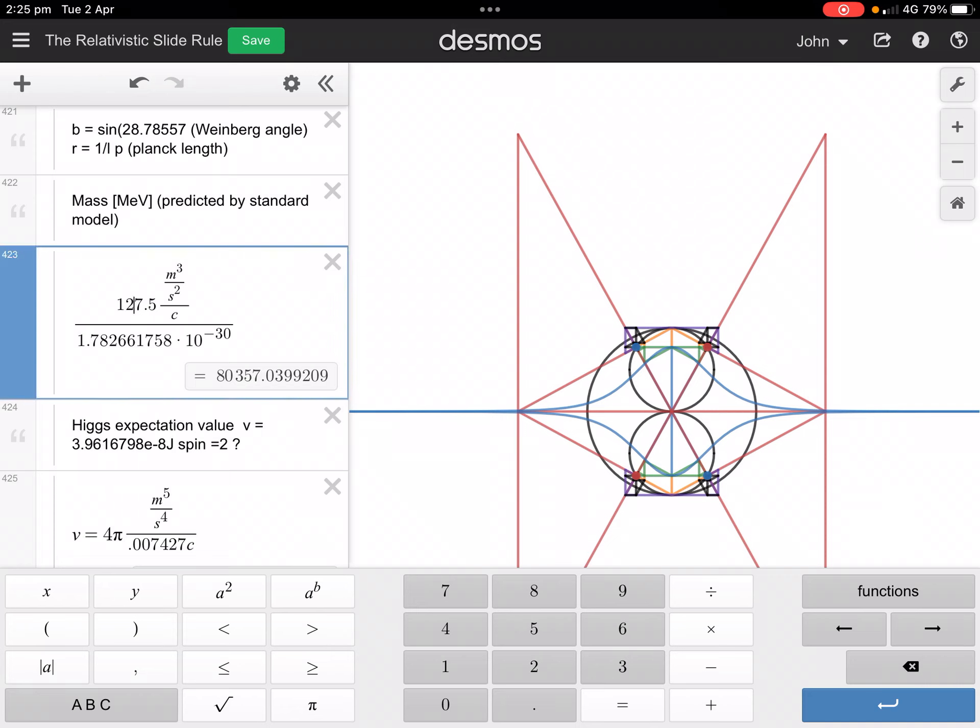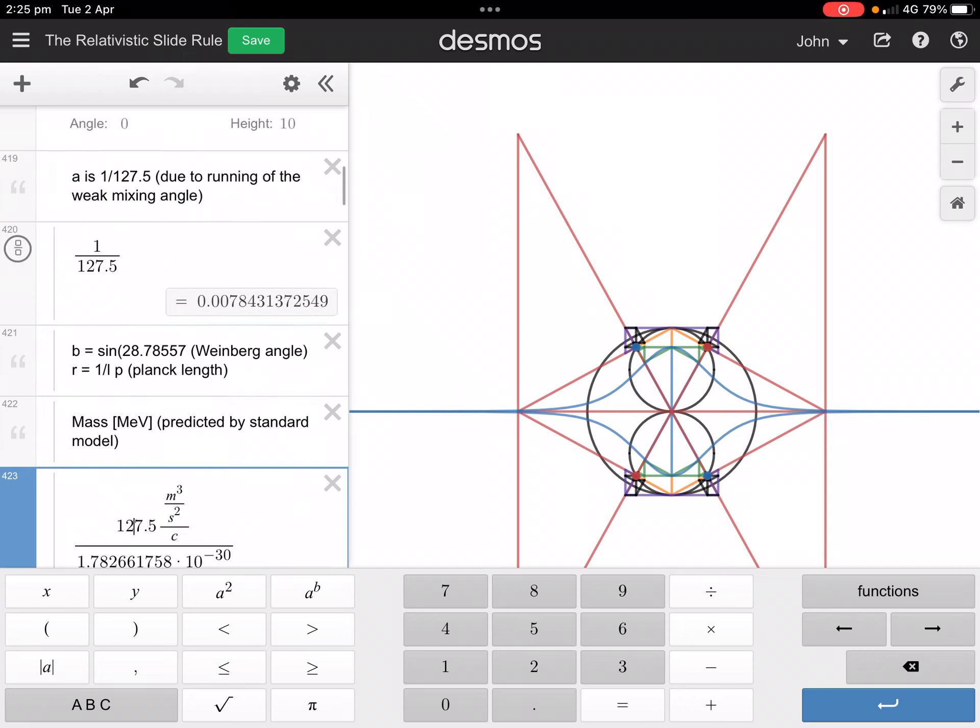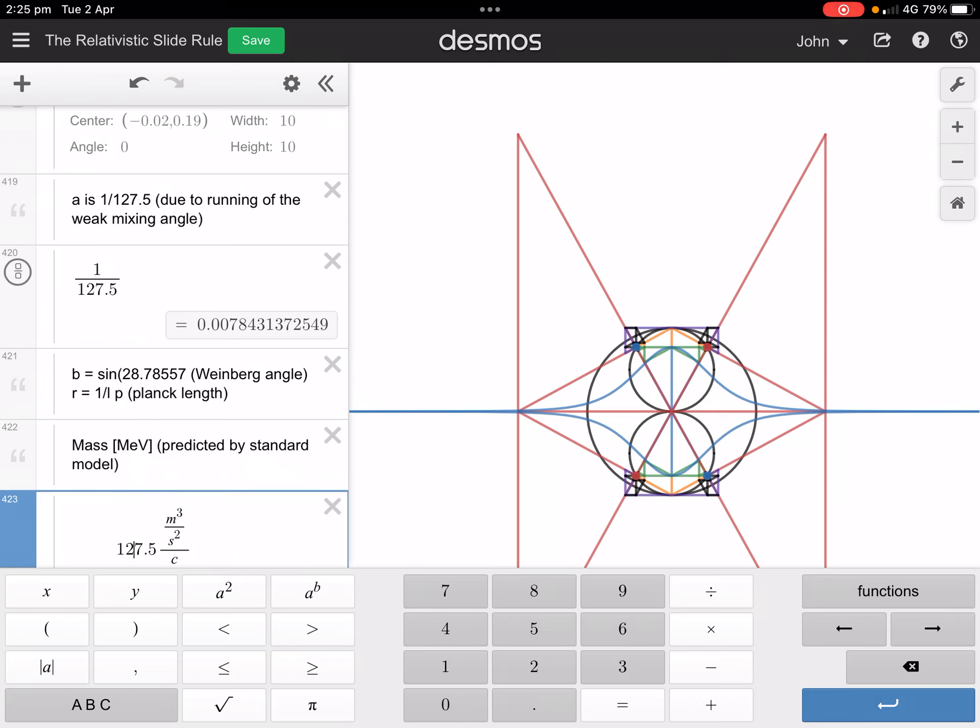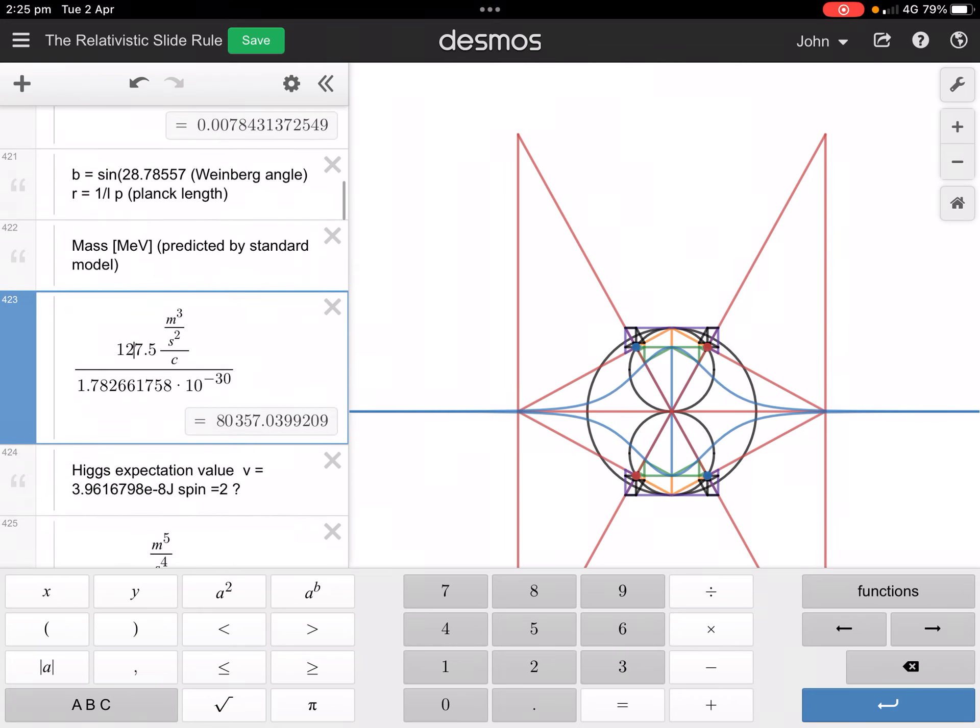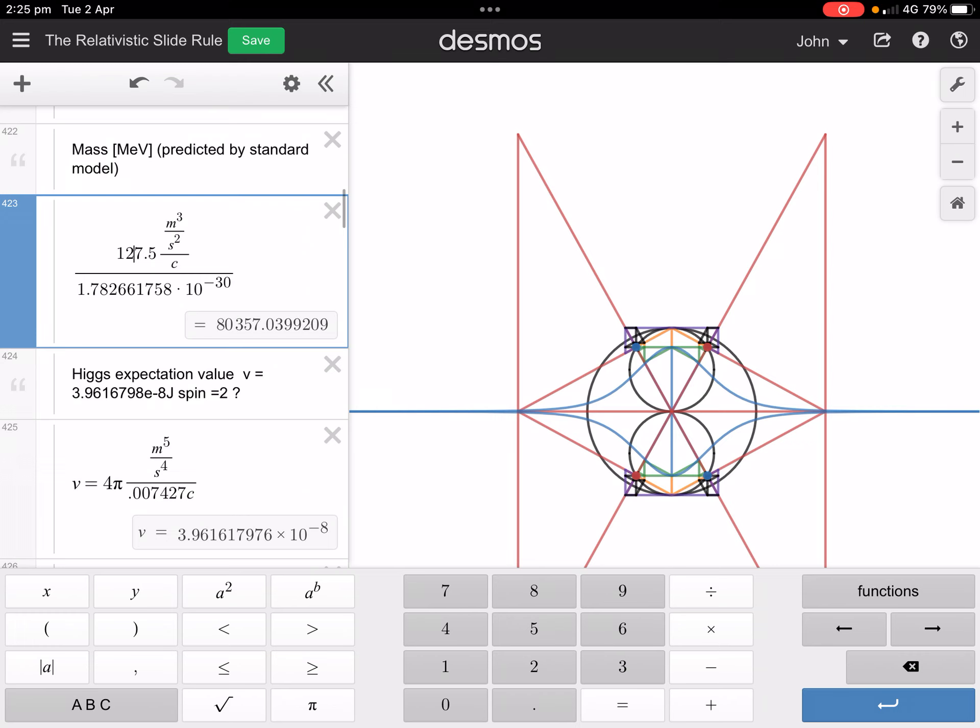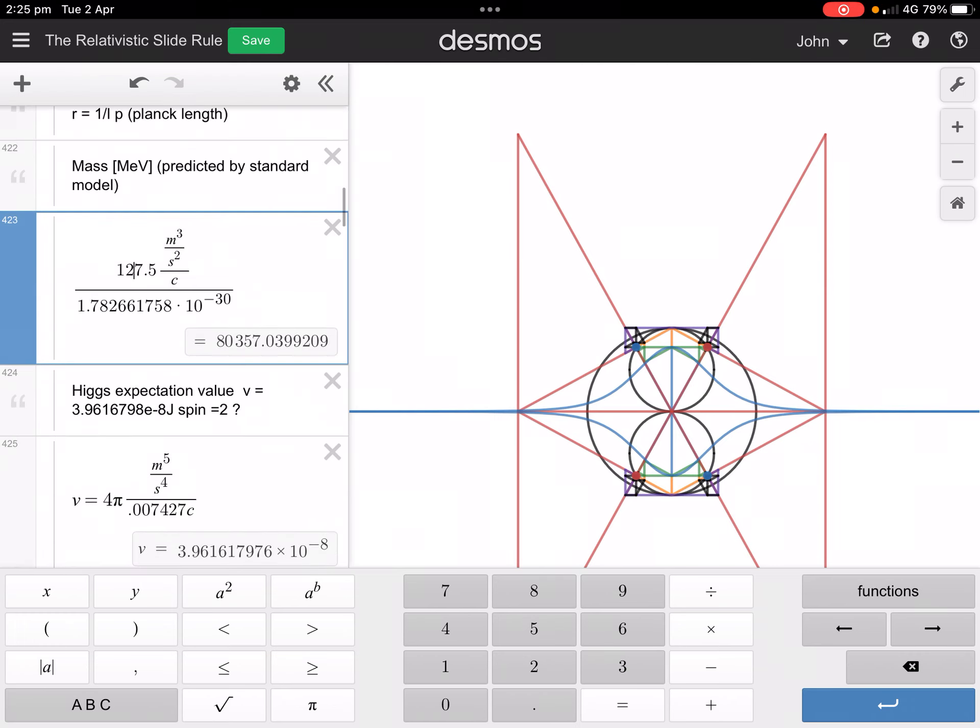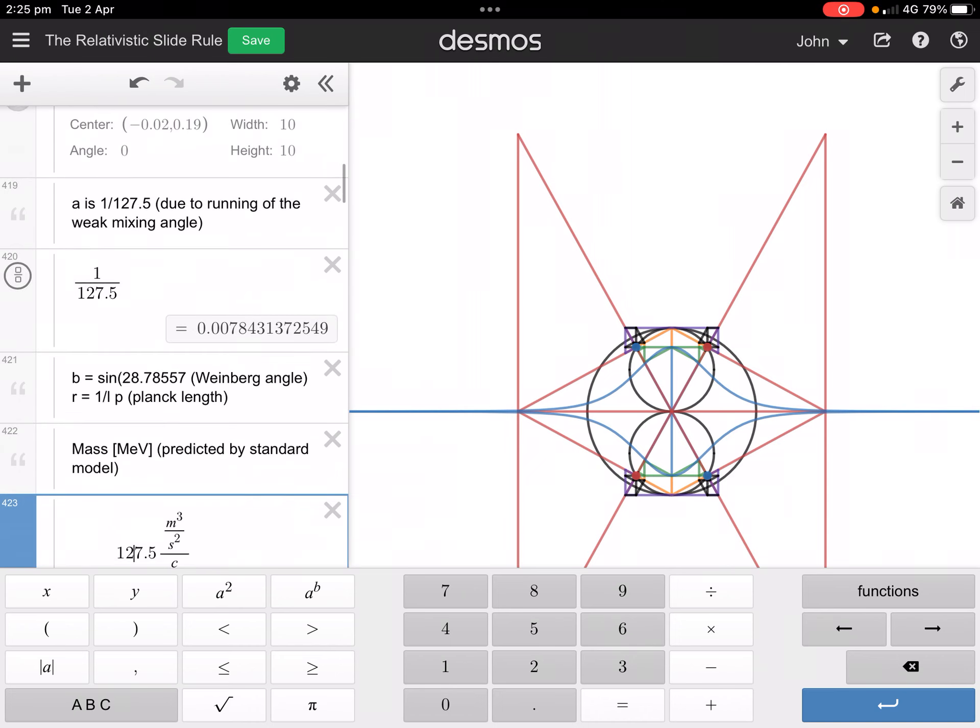But when I realized that there's a running of the weak mixing angle, then it became exactly right. So there is the standard model prediction.